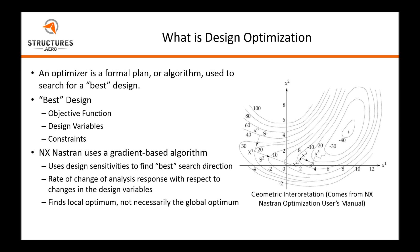NX Nastran uses a gradient-based algorithm. A gradient-based algorithm uses design sensitivities to find the best search direction within your design space. Design sensitivity is essentially the rate of change of an analysis response with respect to changes in the design variables. This cartoon image on the right is from the NX Nastran optimization user's manual, and the objective function is shown as a contour plot in 2D, with axes X1 and X2 as our design variables.